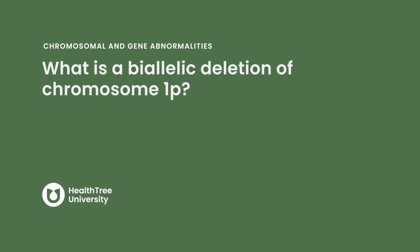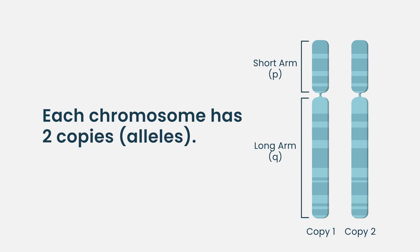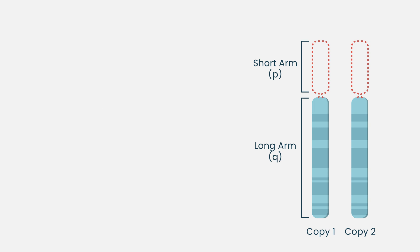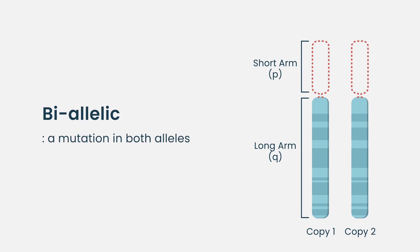What is a biallelic deletion of chromosome 1P? For each chromosome, you should have two copies. If you lose one or there's a problem with one, the theory is the other one will still work. However, if you lose the other one as well, then you have none left to do the work — and that is what we call biallelic, meaning two.